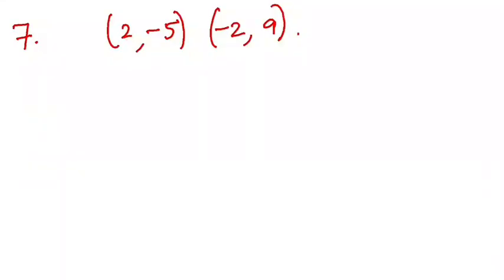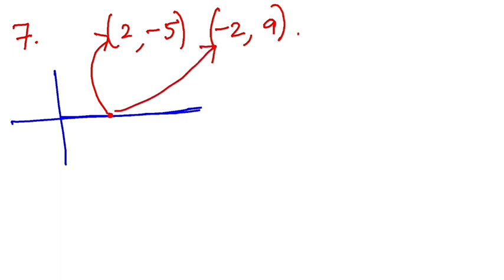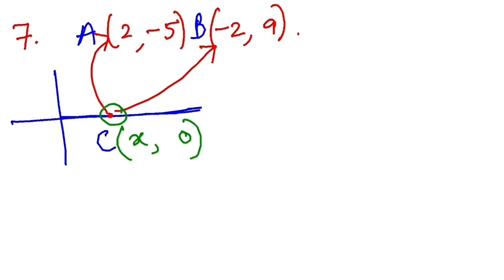Now let's move on to Question Number 7. Please read the question first. What is given is that there is a point on the x-axis that is equidistant from two other points. Let me name them: this is A, this is B, and the point on the x-axis is C. Since C is on the x-axis, its y-coordinate will be 0, and the x-coordinate is some unknown value x.